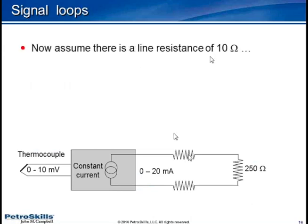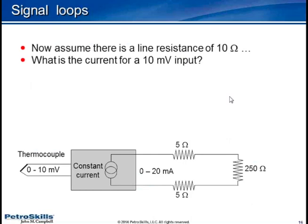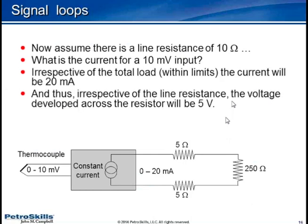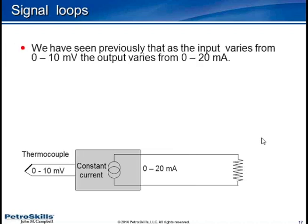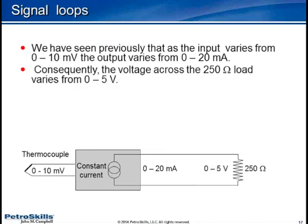We've seen previously that as the input varies from 0 to 10 millivolts, the output varies from 0 to 20 milliamps. Consequently, the voltage across the 250 ohm load also varies from 0 to 5 volts.